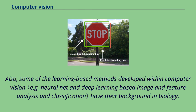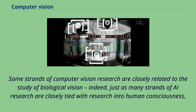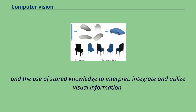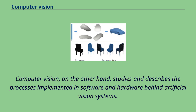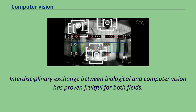Some strands of computer vision research are closely related to the study of biological vision, just as many strands of AI research are closely tied with research into human consciousness and the use of stored knowledge to interpret, integrate and utilize visual information. The field of biological vision studies and models the physiological processes behind visual perception in humans and other animals, whereas computer vision studies and describes the processes implemented in software and hardware behind artificial vision systems. Interdisciplinary exchange between biological and computer vision has proven fruitful for both fields.